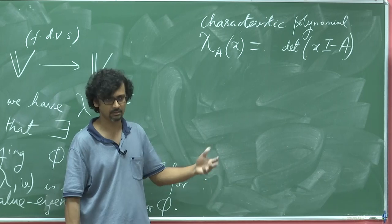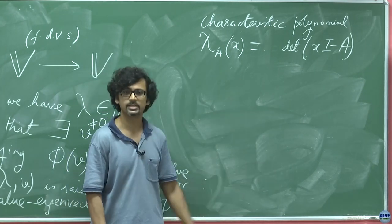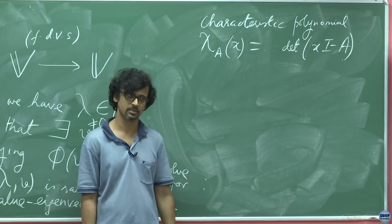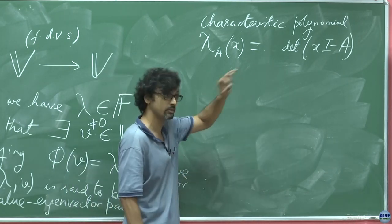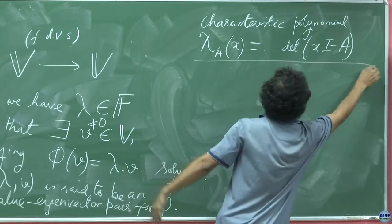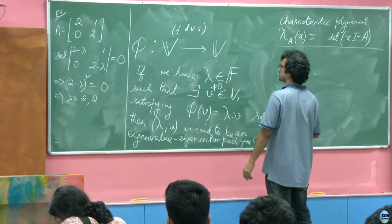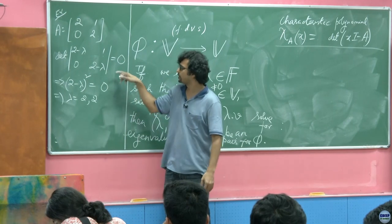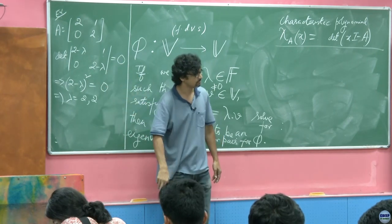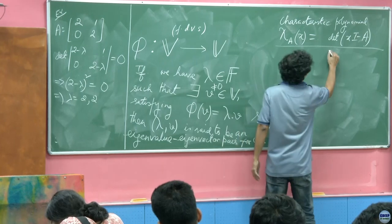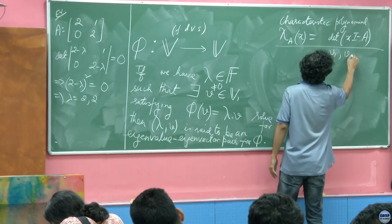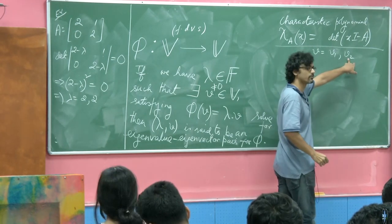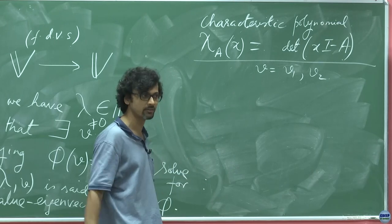If you choose the complex field, even if the matrix looks like a real matrix, you will always get the requisite number of eigenvalues equal to the dimension of the vector space. Existence of eigenvalues is done and dusted. Now, given lambda = 2 twice, let us evaluate the eigenvectors V1 and V2. We have [[2,1],[0,2]] acting on (V11, V12) equals 2 times (V11, V12).